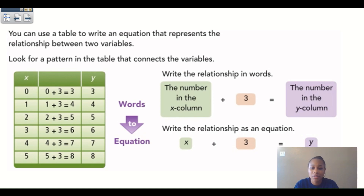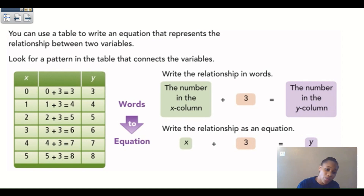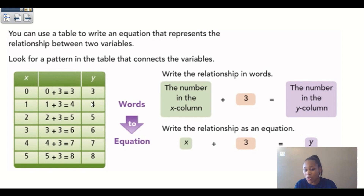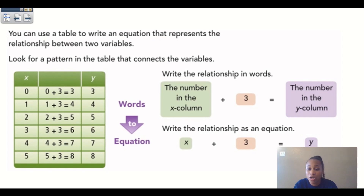Looking at the pattern in a new table, we can figure out the relationship between X and Y. The X values are 0, 1, 2, 3, 4, 5, and the Y values are 3, 4, 5, 6, 7, 8. When X is zero, Y is three; when X is one, Y is four; when X is two, Y is five. You can graph the relationship or write it in words first, then change those words into an equation.